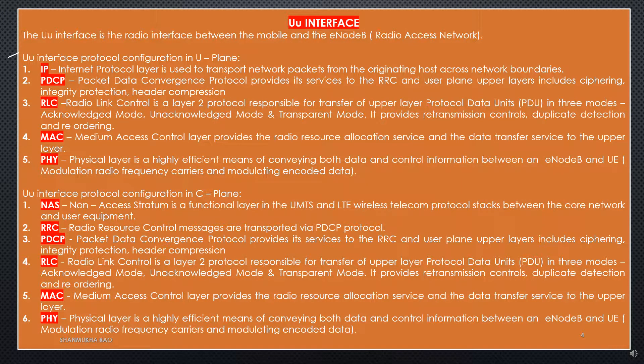UU Interface is the radio interface between the mobile and the E-NodeB radio access network. UU Interface Protocol Configuration in the user plane: first is IP — Internet Protocol layer is used to transport network packets from the originating host across network boundaries. Second is PDCP — Packet Data Convergence Protocol provides its services to the RRC and user plane. Upper layers include ciphering, integrity protection, and header compression.